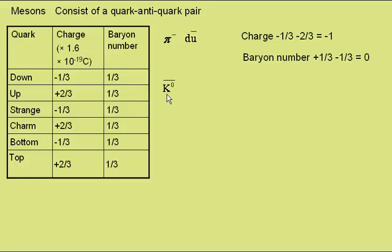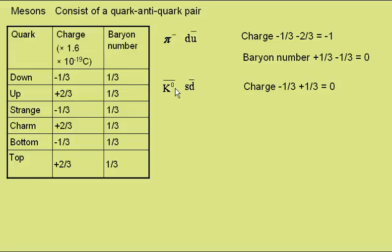The k-nought, or anti-k-nought, one of the kaons, consists of a strange anti-down quark pair. Charge is minus a third for the strange, plus one third for the anti-down, giving an overall charge of nought, hence the zero superscript. And a baryon number of plus one third minus a third equals nought, like all mesons.